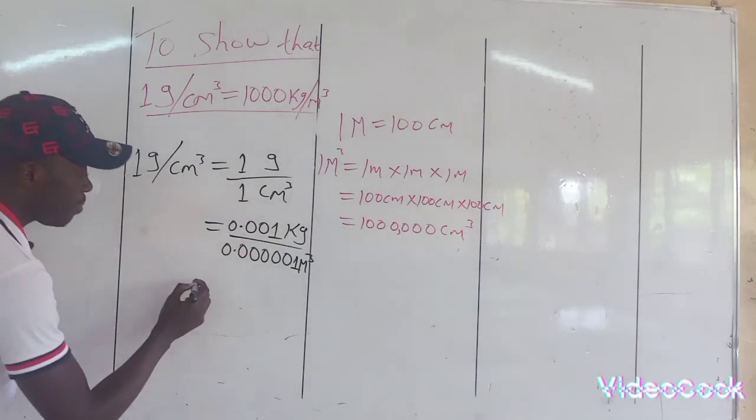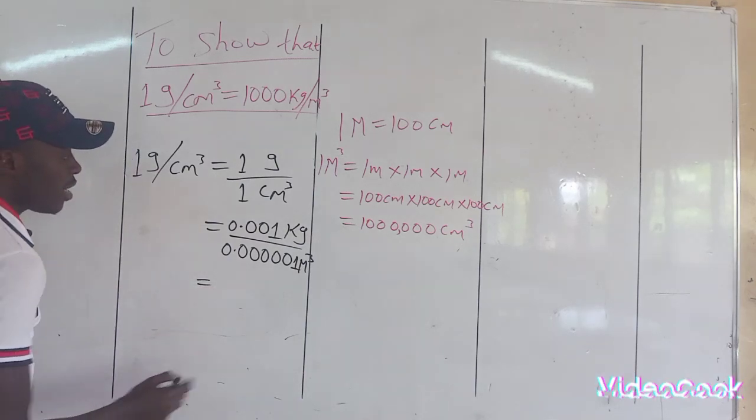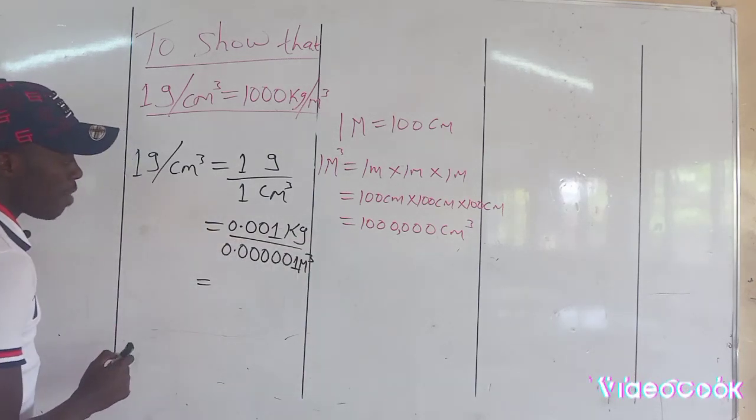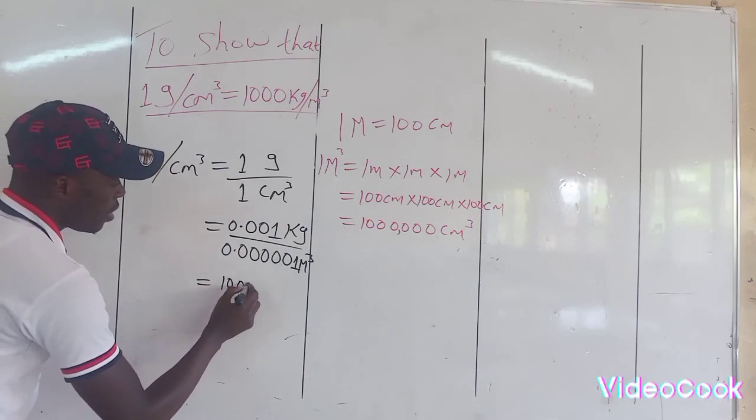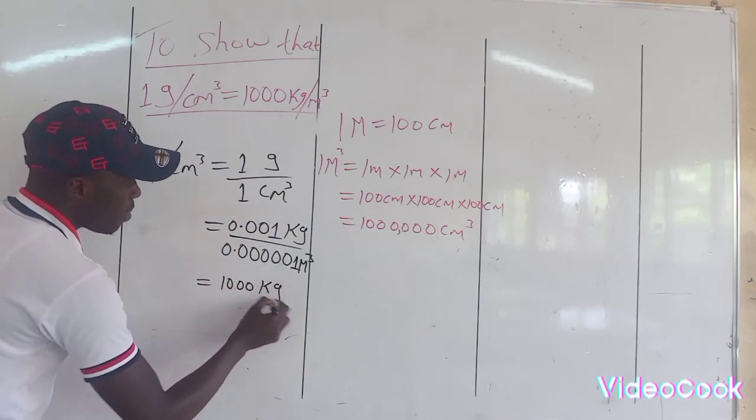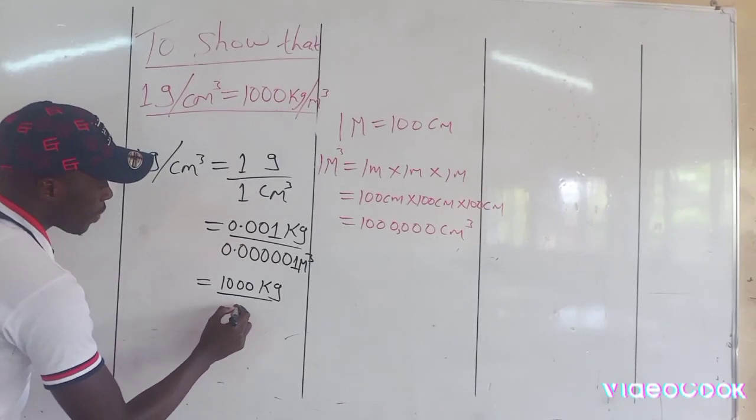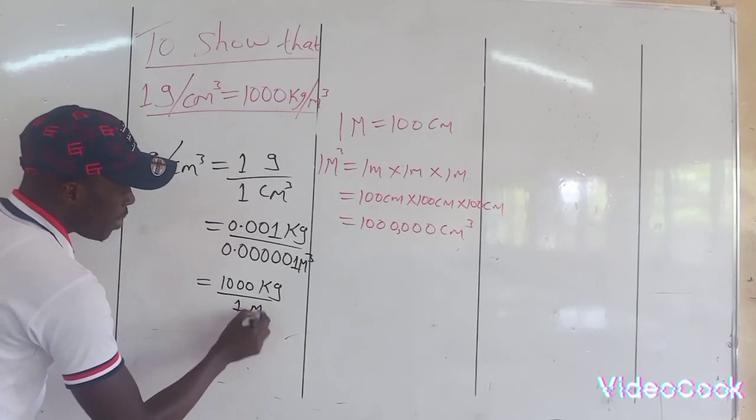When you divide these two, you will realize that if you multiply by 1 million by 1 million, you will get 1,000 kilogram divided by 1 cubic meter.